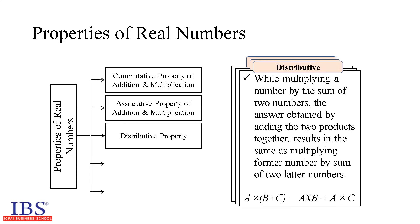Distributive property: according to this property, while multiplying a number by the sum of two numbers, the former number is distributed to both latter numbers and multiplied by each one separately. The answer obtained by adding the two products gives the same result as multiplying the former by the sum of the two latter numbers. That is, a × (b + c) = a × b + a × c.